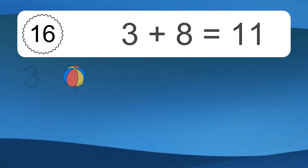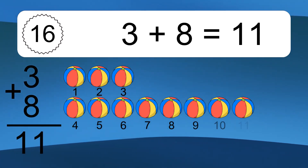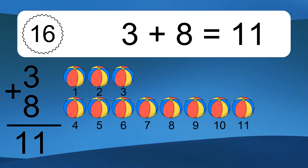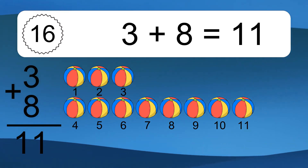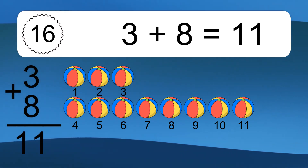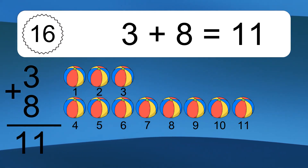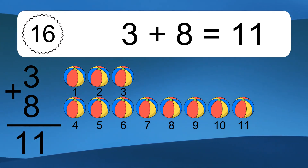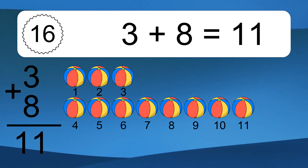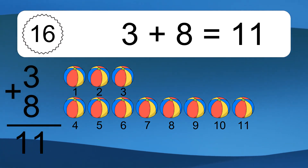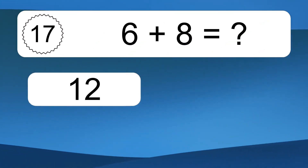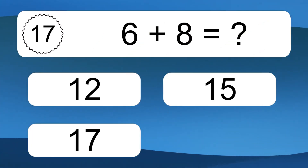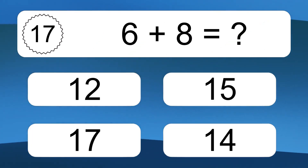3 plus 8 equals 11. Let's count it, 1, 2, 3, 4, 5, 6, 7, 8, 9, 10, 11.